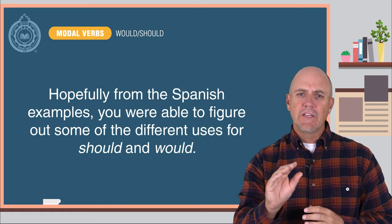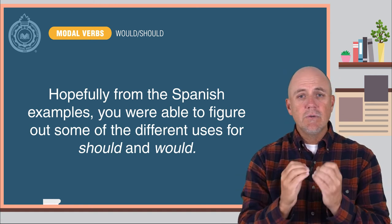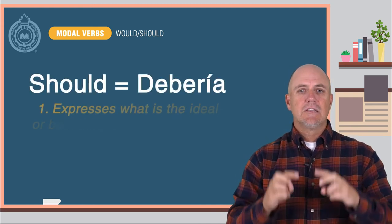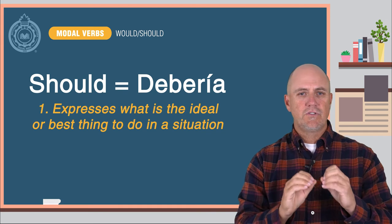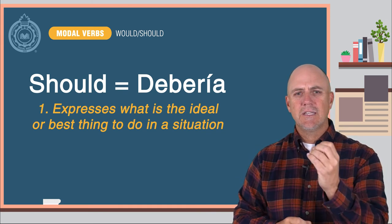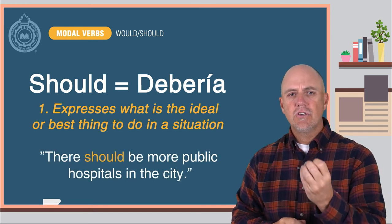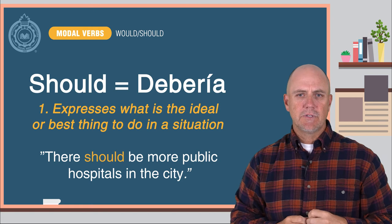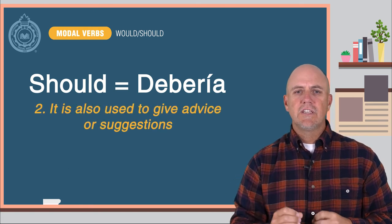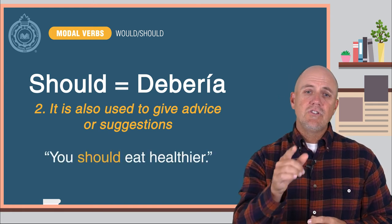Hopefully, from the Spanish examples, you were able to figure out some of the different uses for SHOULD and WOULD. SHOULD is simply DEBERÍA. The two most common uses of SHOULD are: first, to express what is the ideal or best thing to do in a situation — for example, there should be more public hospitals in the city. And secondly, SHOULD is also used to give advice or suggestions — for example, you should eat healthier.